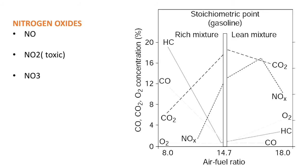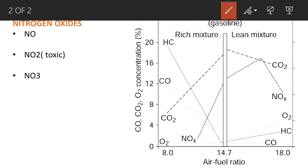Now let's look at the emission chart. It is clear that rich mixtures give more hydrocarbon emissions and very low nitrogen oxides. Hydrocarbons are at maximum when the air-fuel mixture is 8:1.